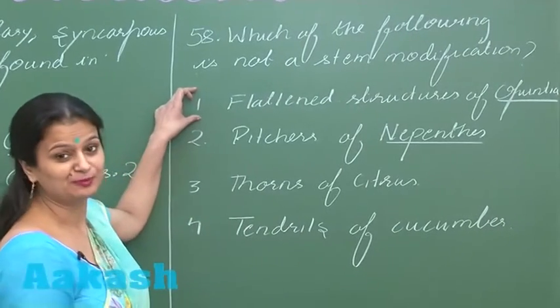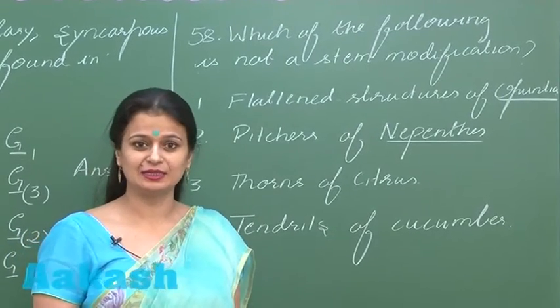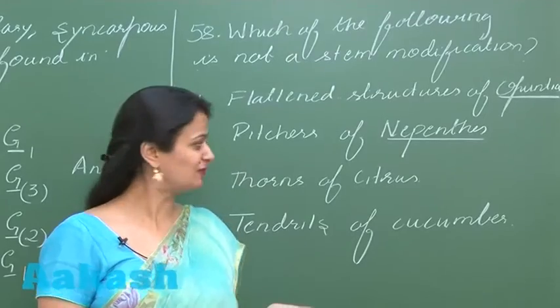Flattened structures of Opuntia. Flattened structure of the Opuntia you call them as phylloclade. Yes, they are stem modification.